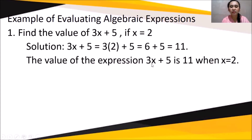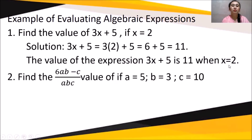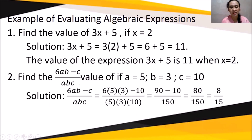Another example: find the value of (6ab - c) / abc if a = 5, b = 3, c = 10. Solution: 6(5)(3) - 10 all over (5)(3)(10). That is 90 - 10 over 150, which equals 80/150. Simplifying by dividing numerator and denominator by 10 gives 8/15.